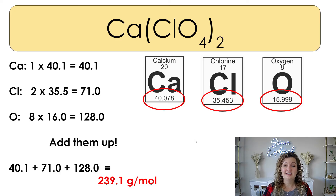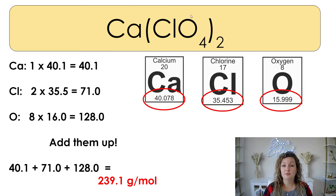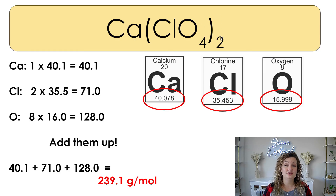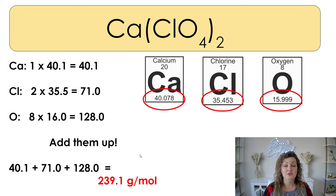Last one: Ca(ClO₄)₂. We have 1 Ca, multiply by 40.1. Cl has an understood 1, but we multiply by what's outside the parentheses — which is 2 — so 2 Cl, multiplied by 35.5. Then oxygen: the 4 is multiplied by the 2 outside the parentheses to give us 8 oxygen, multiplied by 16. Add them all up and you have your molar mass for the compound, which is 239.1 grams per mole.